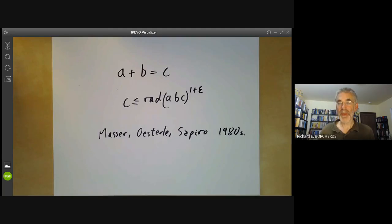I'm going to say what the ABC conjecture is and then I'll give the proof of it for polynomials and then I'll make a few comments on the current state of it.